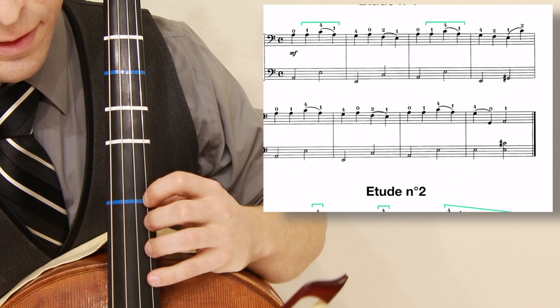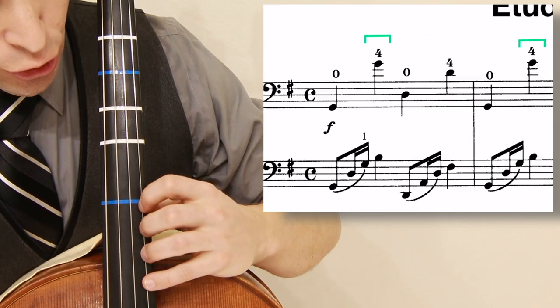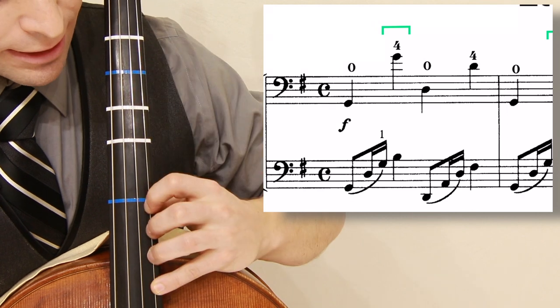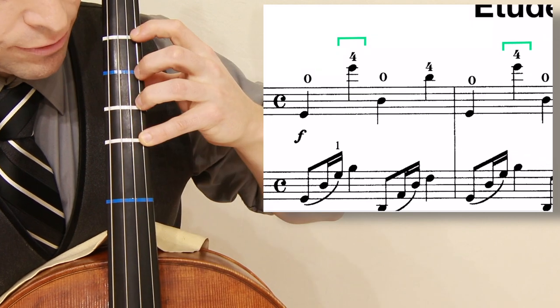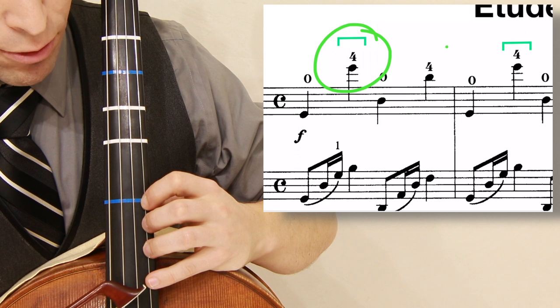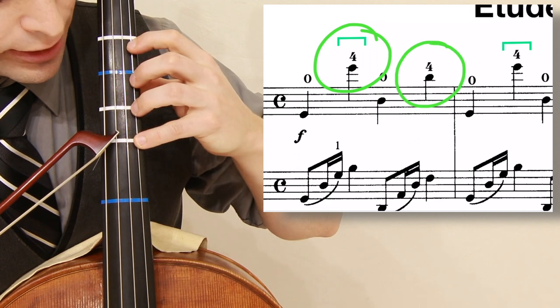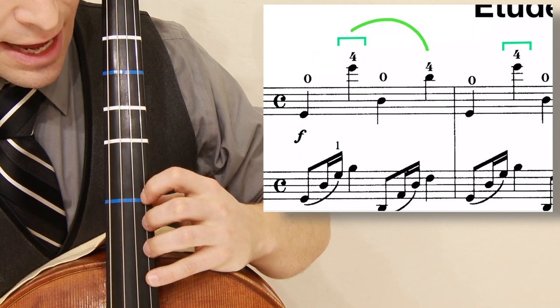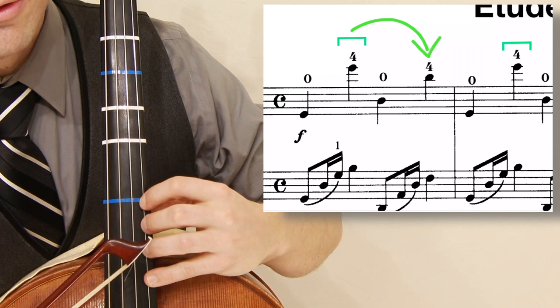The next etude, number two, you want to be able to shift back and forth between the fourth and the first position. It's the four here that you're landing and it's a four here that you're landing. So make sure you're nice and accurate and you're keeping your hand small when you go up here and making your hand larger when you go back to first position.